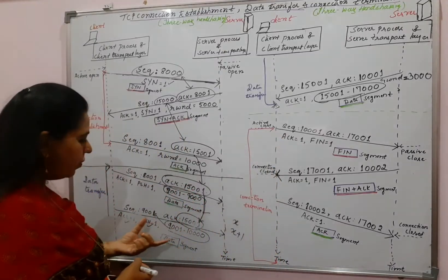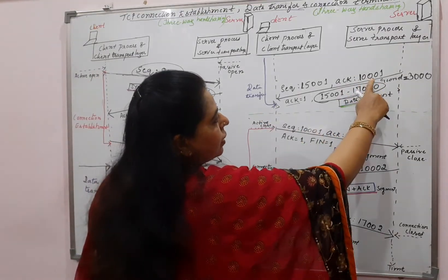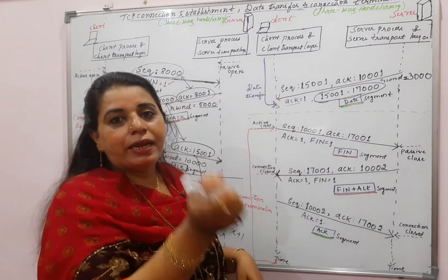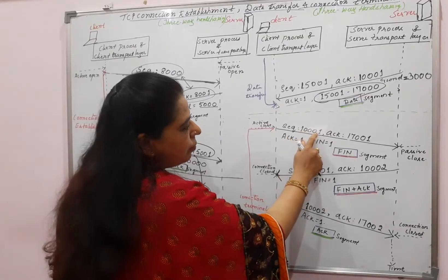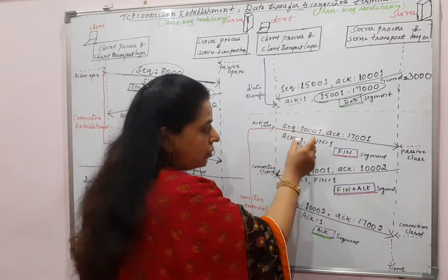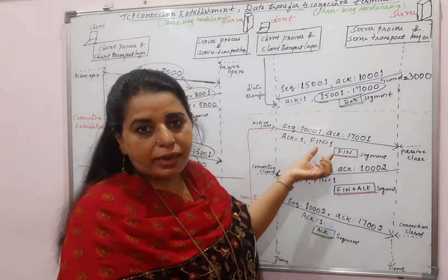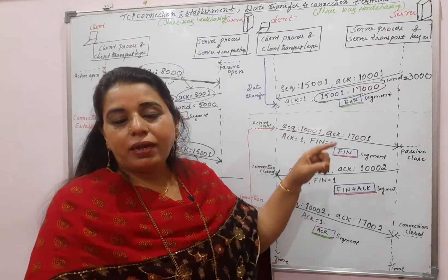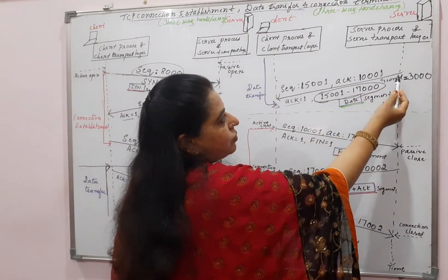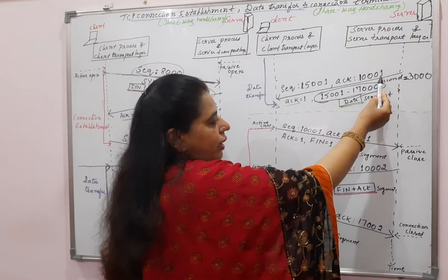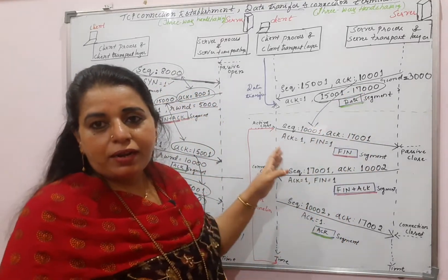It is writing sequence number 1001. The client has sent data up till 10000, and in the next data which came from the server to the client, the acknowledgement is 1001. The server is expecting that next time when you send the data, your sequence number will be 1001. That is why it is using sequence number 1001 in the FIN segment. This sequence number 1001 will be the first byte number if it is sending any data to the server next time. The client has set acknowledgement as 17001.